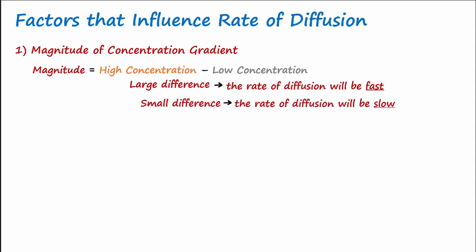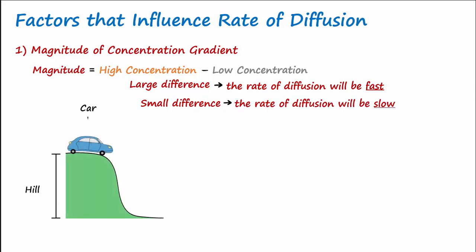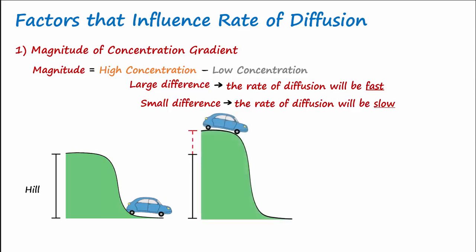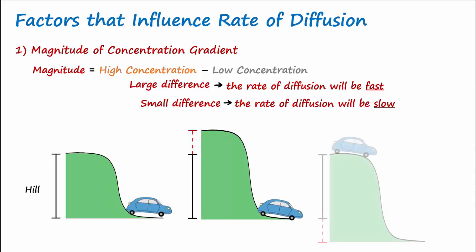Here's another analogy. There is a car at the top of a hill. If you let it go, it will roll down the hill. To make it go faster down the hill, we could do one or both of two things. First, we could take it to the top of a higher hill and make the high higher. Or we could make the low lower and dig a big hole. Either way, we have made a bigger difference between the high and the low, and we could say we have increased the magnitude of the concentration gradient to make the car go faster down the hill.